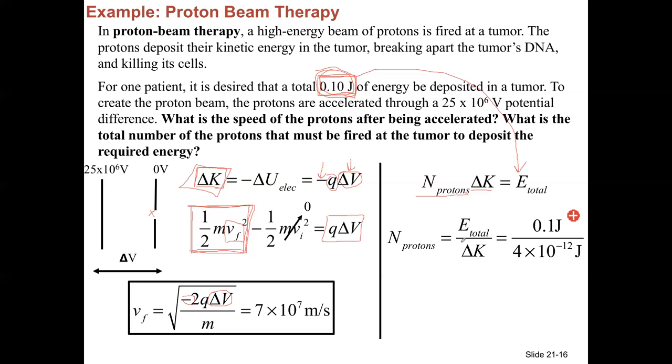So I'll go ahead and say that the total energy, solving for the number of protons we'll need, is 0.1 joules. If you work out the kinetic energy we get in one proton, it's going to be 4 times 10 to the minus 12 joules. So this ratio should give us the number of protons we need to deliver to the tumor, which I also get if you round to 2.5 times 10 to the 10.